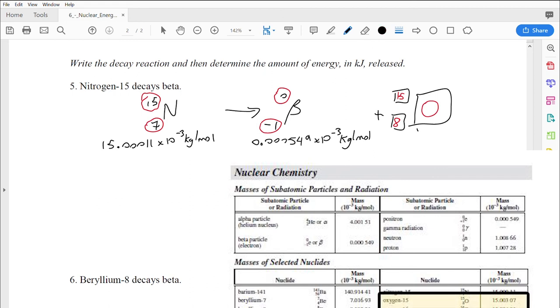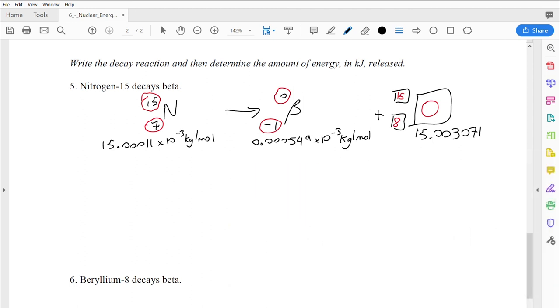There is a mass for oxygen here on the data sheet as well, which I can write down. It is 15.00307 times 10 to the negative 3 kilojoules per mole. One thing you're going to notice is that's really close to the original mass, hasn't changed by a whole lot. Actually, because the masses are so small, we definitely need to include the mass of this beta-negative particle because the differences here are pretty tiny.